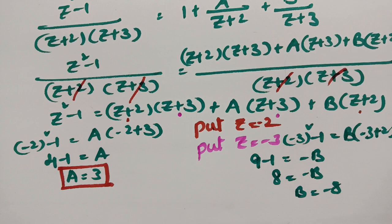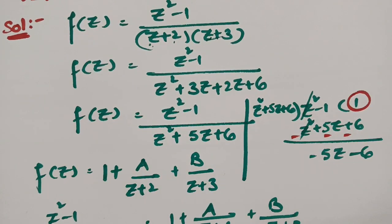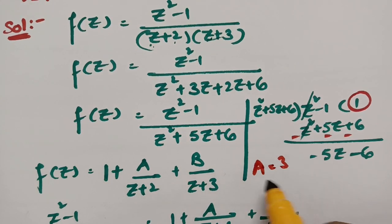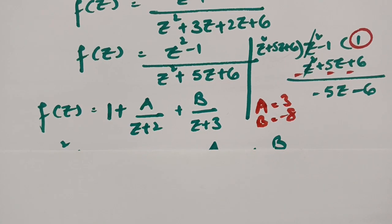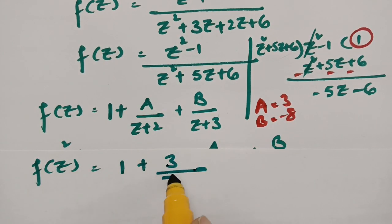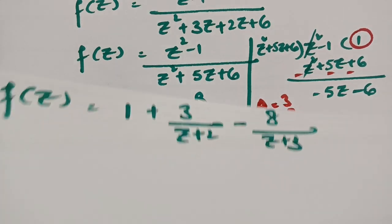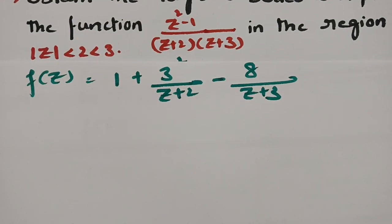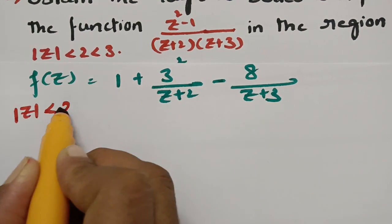We got A = 3 and B = -8. Now, f(z) = 1 + 3/(z+2) - 8/(z+3). The region given is |z| < 2 < 3, meaning z is within a circle of radius 2 centered at 0.